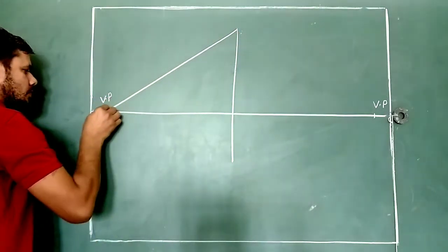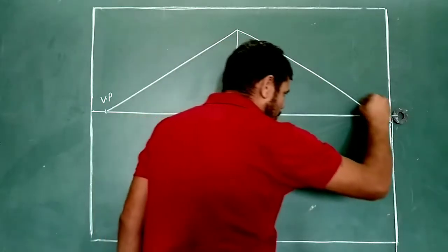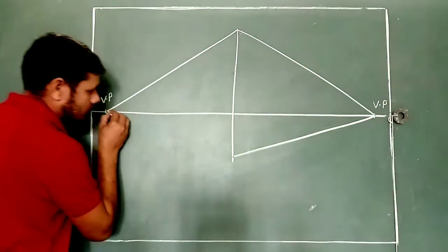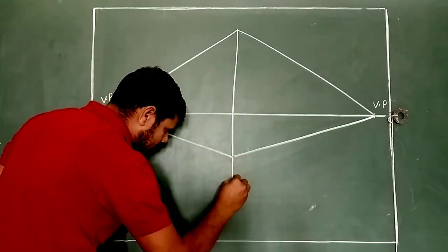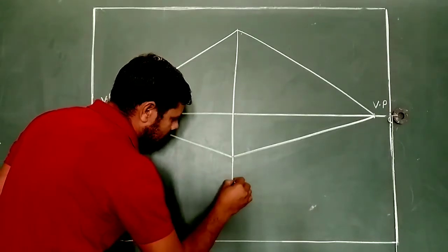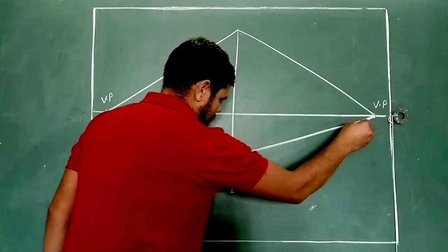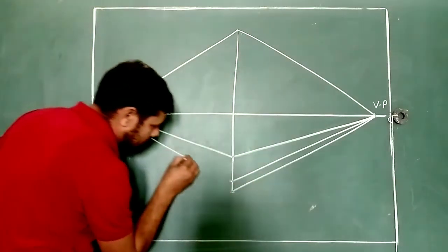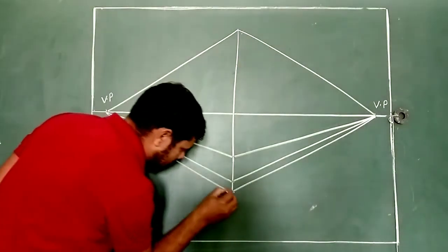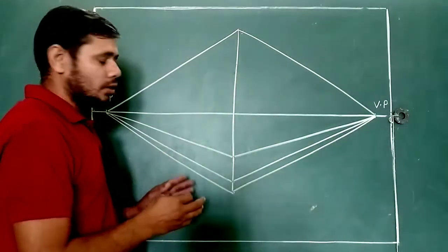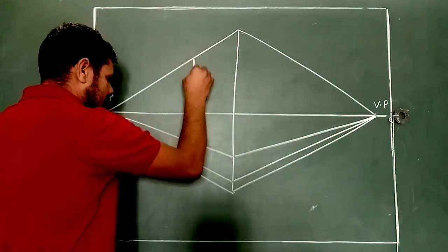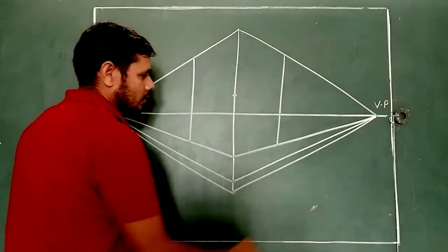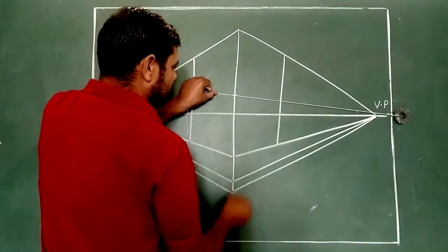We connect this point to this point, and this point to this point, like this. You can use a thread also. We extend this line forward. And with the help of thread, because of that we don't draw a line directly — we just use it to help guide the drawing.